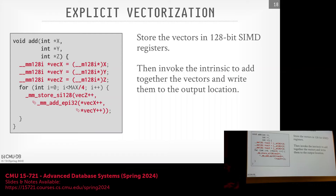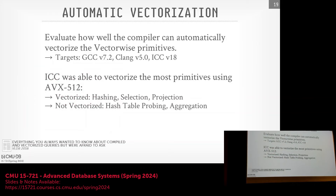Which approach is best? Explicit vectorization gives the most control and the best performance. Automatic vectorization is the easiest to write. Let's look at actual performance differences between explicitly writing vectorized code versus letting the compiler handle it.